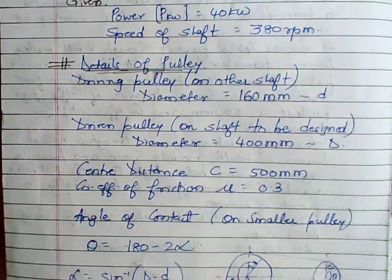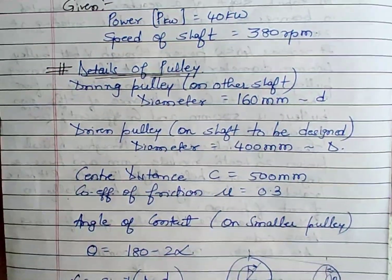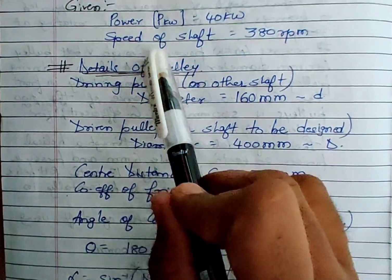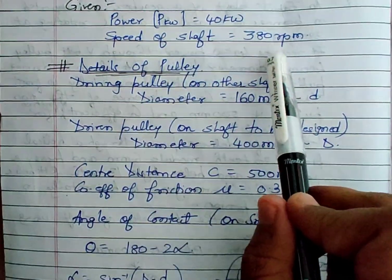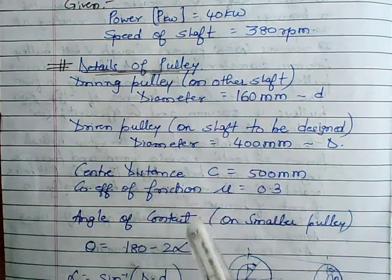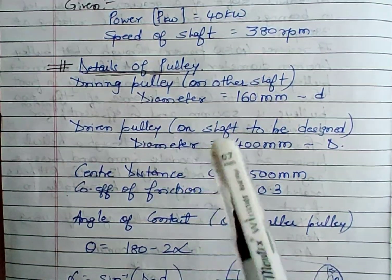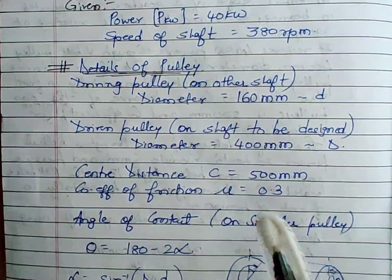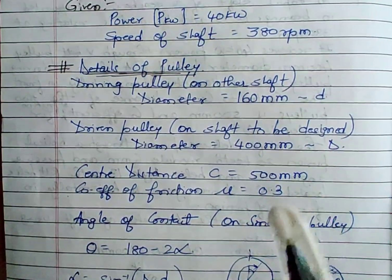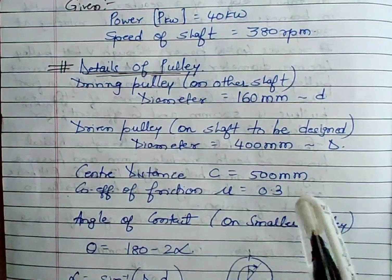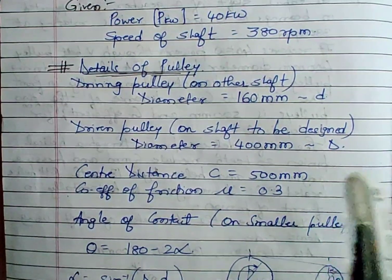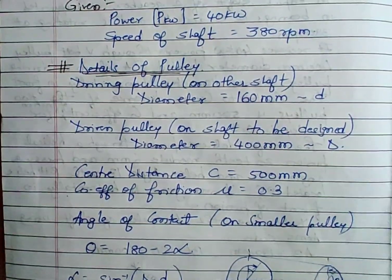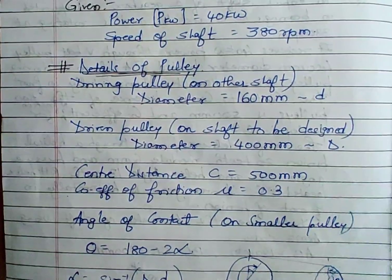Let us now discuss what has been mentioned in the problem. The power given is 40 kW and the speed of the shaft is 380 rpm. We have to assume a direction of rotation — in this case, anti-clockwise. The rotation of the shaft is considered to be in the anti-clockwise sense. This rotation can be changed to clockwise depending on your convenience. Since no specific direction was mentioned in the problem, we have assumed anti-clockwise.